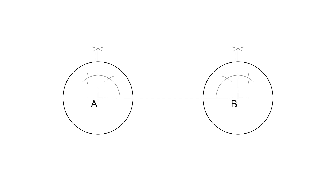Label the points of intersection of the perpendiculars and the circles as C and D. Line CD is the required tangent, and lines AC and BD are the normals.